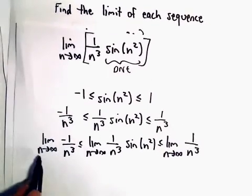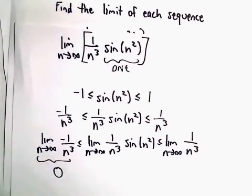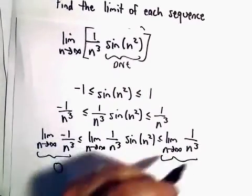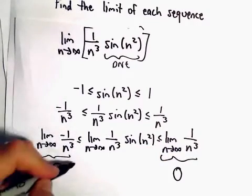The limit as n goes to infinity of negative 1 over n cubed is simply going to equal 0. Likewise, the limit as n goes to infinity of positive 1 over n cubed is going to equal 0.